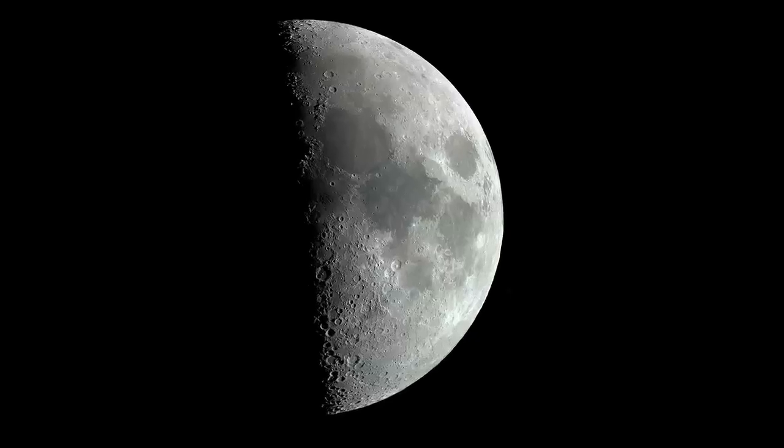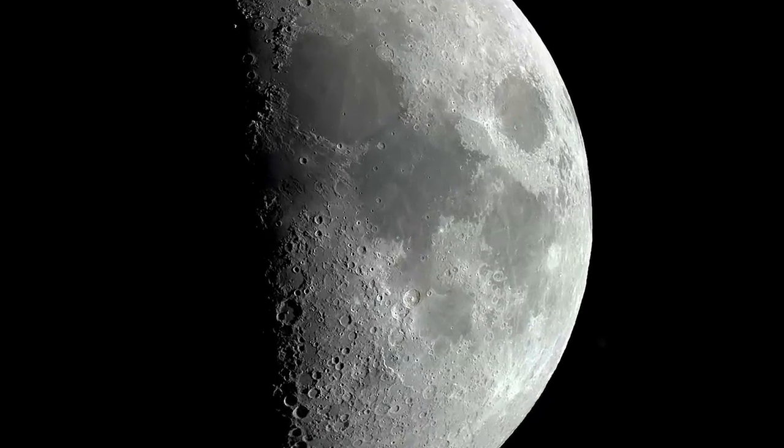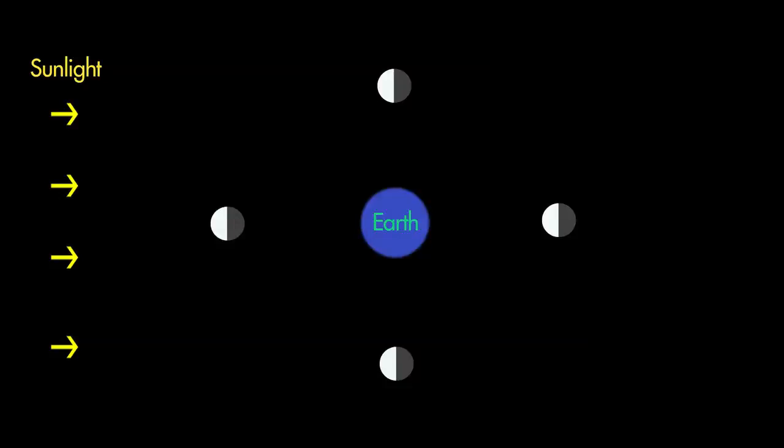But perhaps the most obvious thing about the moon is that it has phases. The moon's phases occur as the moon orbits the earth. As the angle between the sun and the moon in our sky changes, the amount of the moon's face that's illuminated from our perspective changes too.